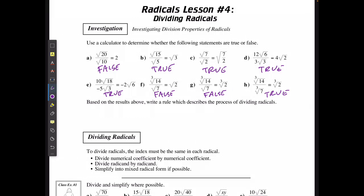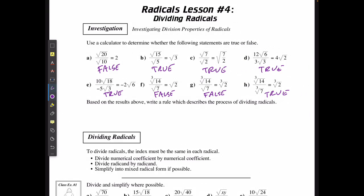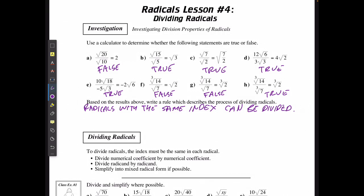Based on what we see for the ones that actually work — and we can very prominently see it here — what are the requirements? It's very similar to multiplying radicals: radicals with the same index can be divided. Divide the coefficients and divide the radicands.